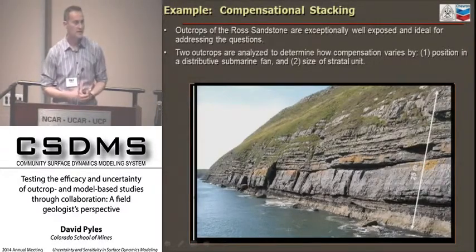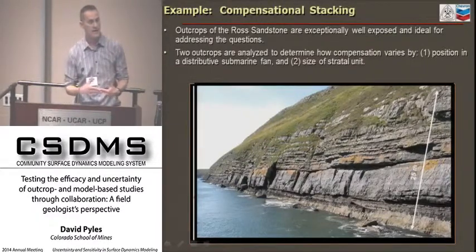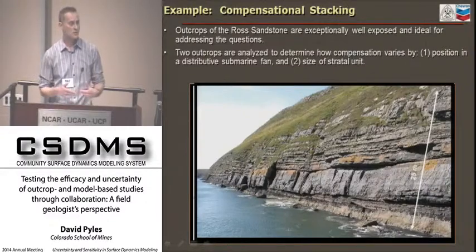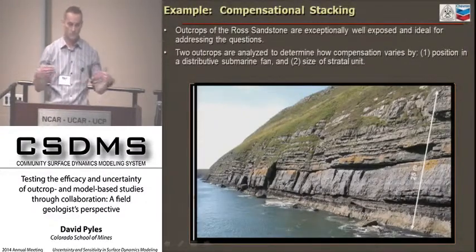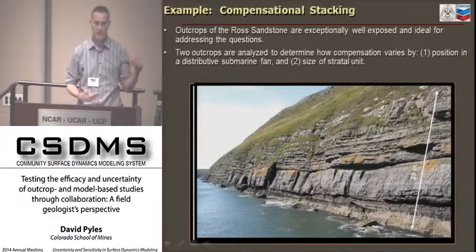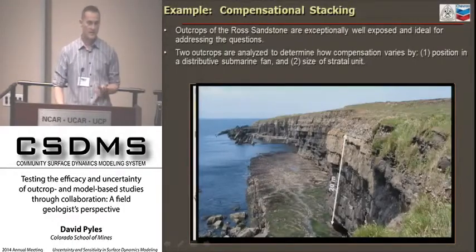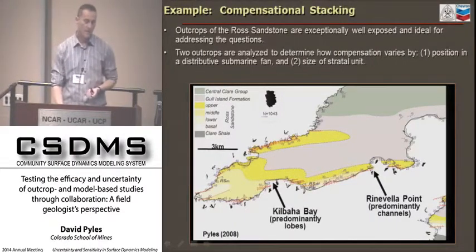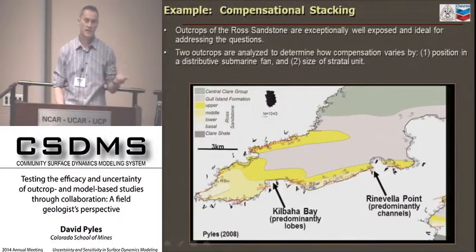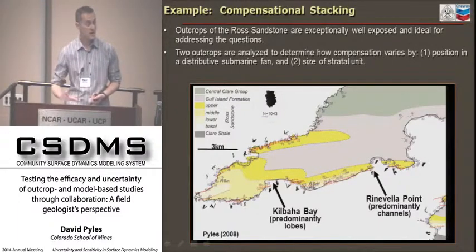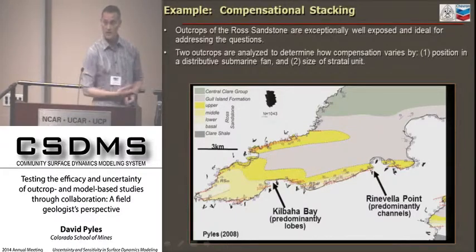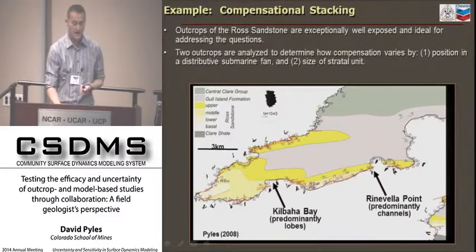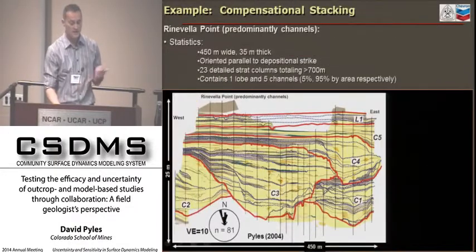Here are a couple of images of the sea cliff exposures. We developed a surface-based approach for quantifying compensational stacking, so we need to be able to define surfaces very well. The surfaces on these sea cliff exposures are remarkably well exposed. I want to take you to two different areas of this outcrop system: Rhinevilla Point, which is predominantly channels, and Kilbaha Bay, which is predominantly lobes. Recall on that distributive fan from the seismic image, channels longitudinally transfer to lobes along their longitudinal transect.